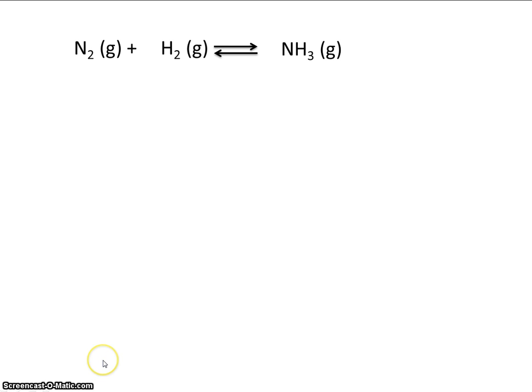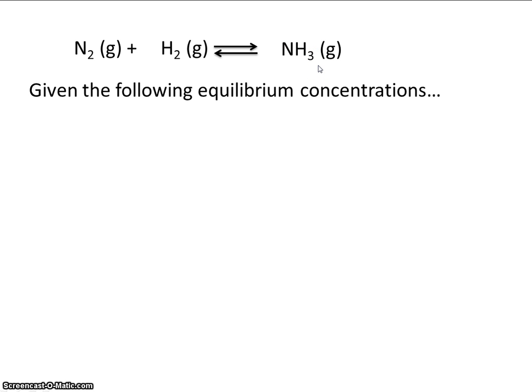All right, let's calculate the equilibrium constant. So nitrogen plus hydrogen will make ammonia. Given the following equilibrium concentrations, we're going to calculate the equilibrium expression. So at equilibrium, the concentration of nitrogen is 0.15 molar, the concentration of hydrogen is 0.2 molar, and the concentration of ammonia is 0.5 molar.